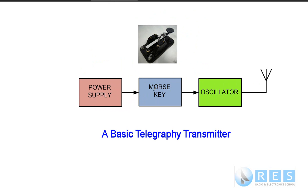If we take the oscillator — and remember an oscillator is a source of radio frequency or audio frequency energy, but in this case radio frequency energy — let's suppose it's oscillating on 1 MHz. So that oscillator will put a signal into the antenna on 1 MHz, but there will be no information on that signal.